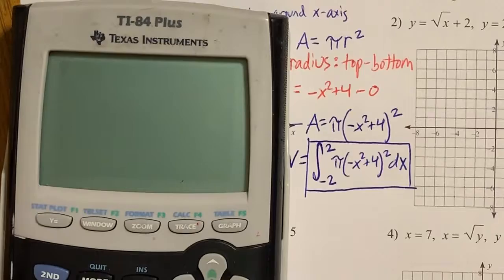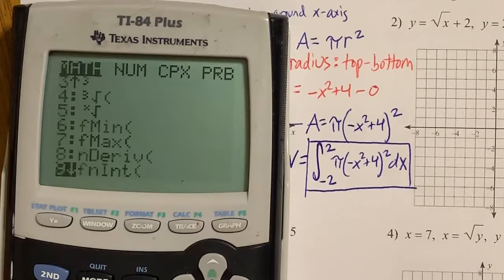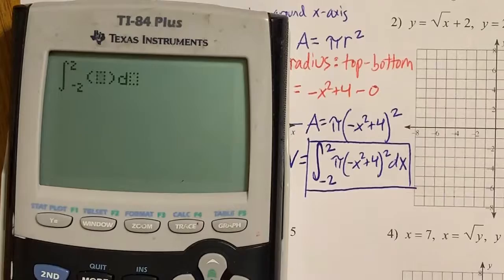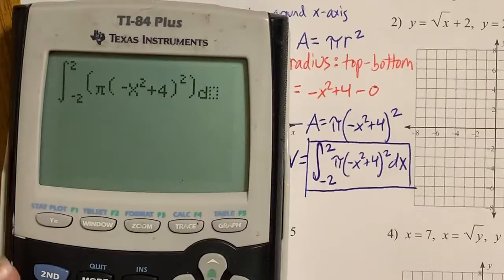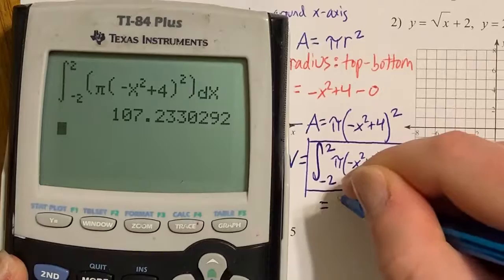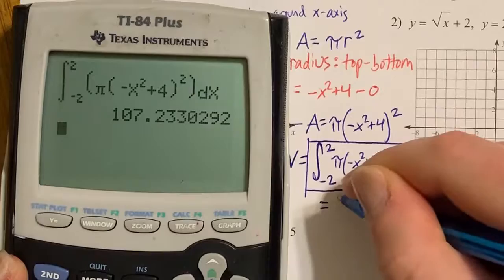So if I pull out my calculator to find integrals, I go to math and then I'm going to scroll down until I get to fn int, definite integral. Then I'm going to put in my bounds, put in π. When I put my function in, make sure you get any parentheses that you need, it will make a difference. And then this is dx. And it looks like my volume will be 107.233. Remember, leave three decimal places, three decimals. All right, so that's my volume.